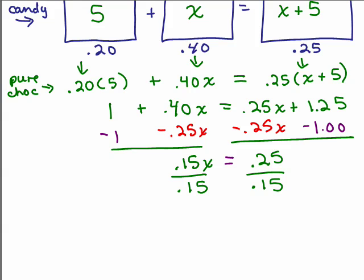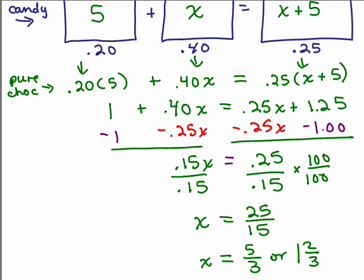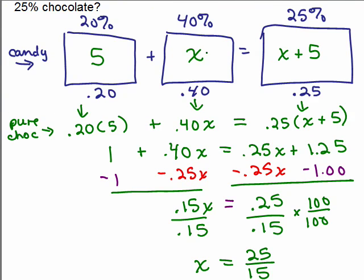You can't leave an answer mixed with decimals and fractions, so we need to simplify this. It's not going to come out evenly in decimal form, so we need to make this a reduced fraction. I'm going to multiply the top and bottom by 100, so I can write 25/15. Multiplying by 100 means I move the decimal place 2 to the right in both numerator and denominator, then reduce. 5 goes into both numbers, so that's 5/3 or 1 and 2/3.